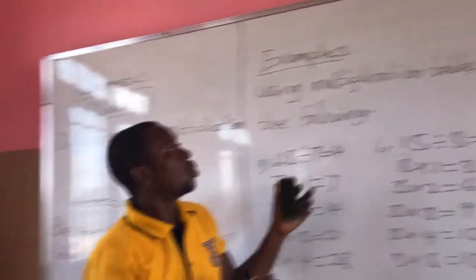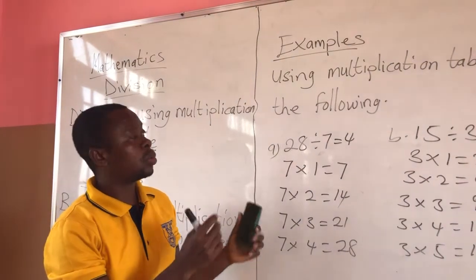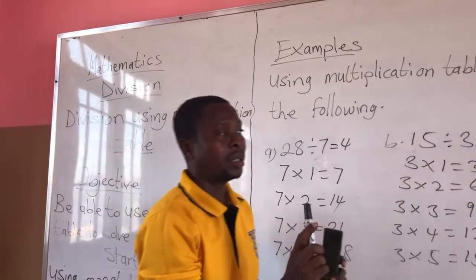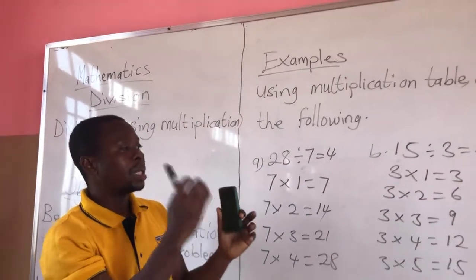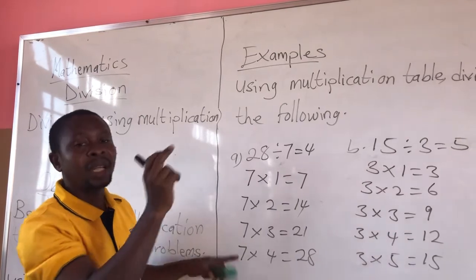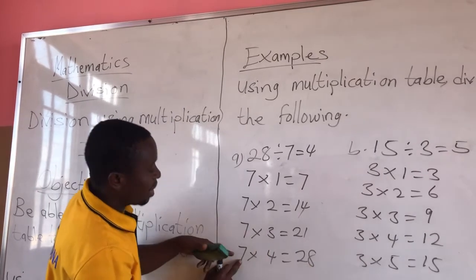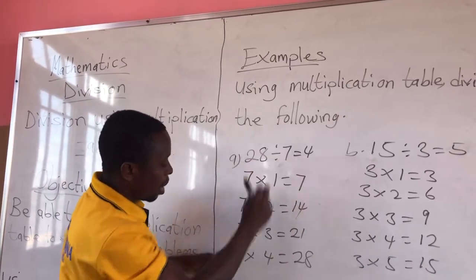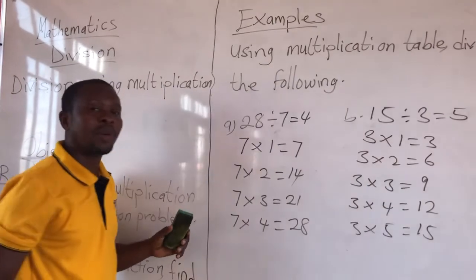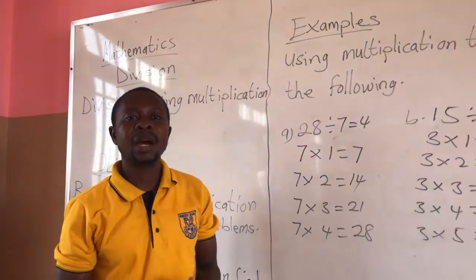So this is how we solve division problems using the multiplication table. We continue to multiply until we get the dividend — the number we are dividing. The number we multiply by the divisor to get the dividend is the answer. For example, here 4 multiplied by 7 gives us 28. I hope you understand. Until we meet again, have a nice day. Bye.